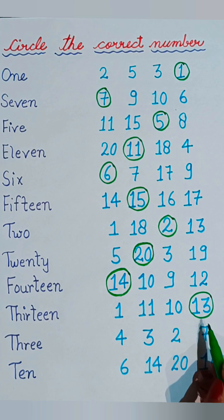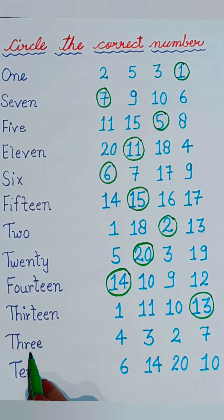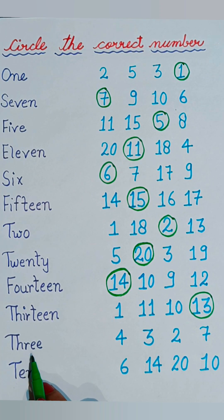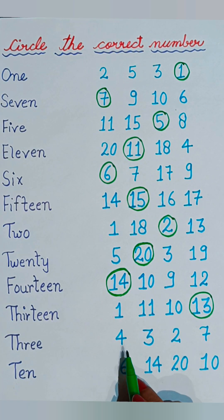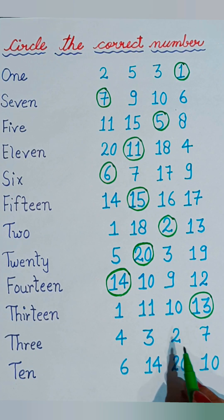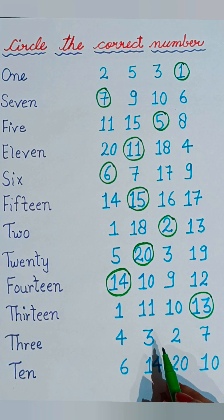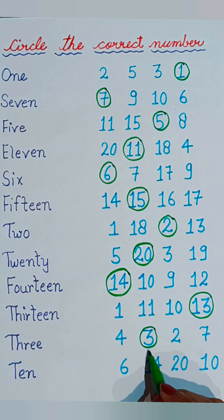See the next one: T-H-R-E-E, three. Now tell me where three is given. Let's see: four, three, two, and seven. Yes, here at the second number three is given, so we will circle the number three.